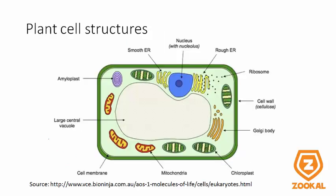For plant cells, you should be able to identify the large central vacuole, the cell membrane, mitochondria, chloroplast, Golgi body, cell wall, ribosomes, rough ER, nucleus, and the smooth ER. You do not need to know the amyloplast.